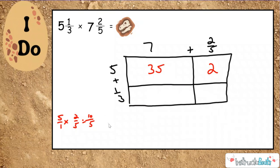Then we have 7 times 1/3, which we know is going to be 7/3. And then we have 1/3 times 2/5, which we know is going to be 2/15. So now that we have all our smaller partial products, we need to add those back together.